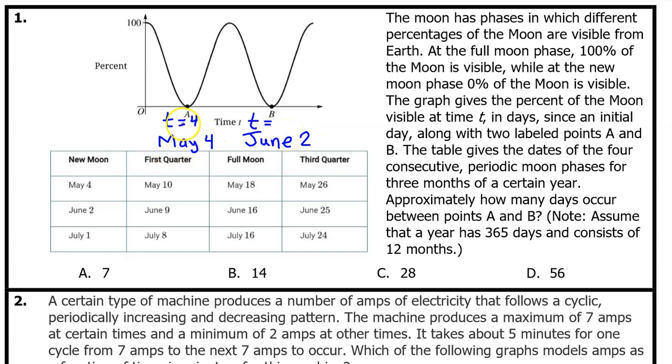Let's call May 4th t equals 4. There are 31 days in May. So May 31st would be t equals 31. Therefore, June 1st will be t equals 32 and June 2nd will be t equals 33. So the number of days from May 4th to June 2nd will be 33 minus 4. That's 29 days. That is closest to answer C.